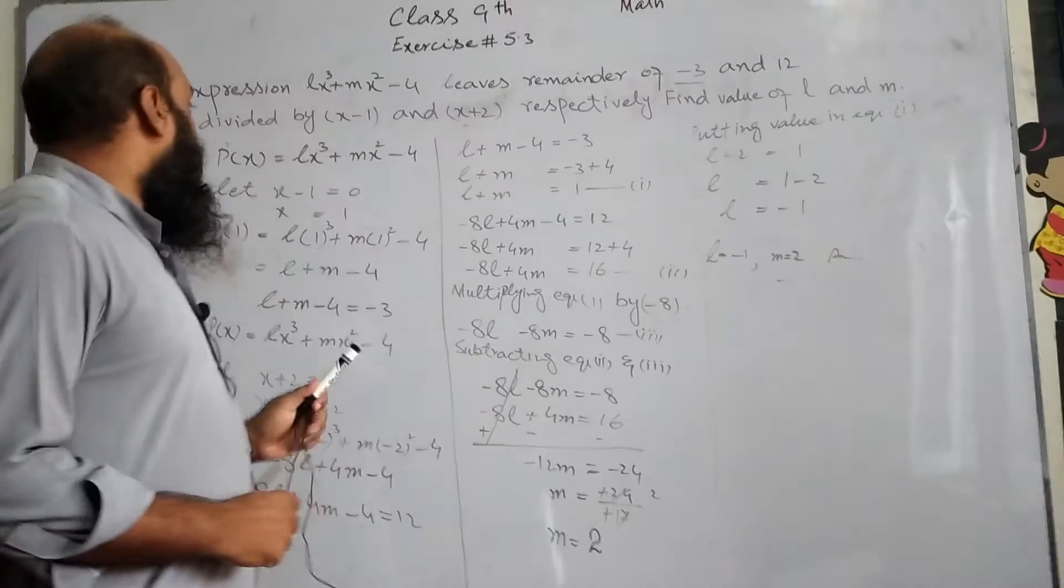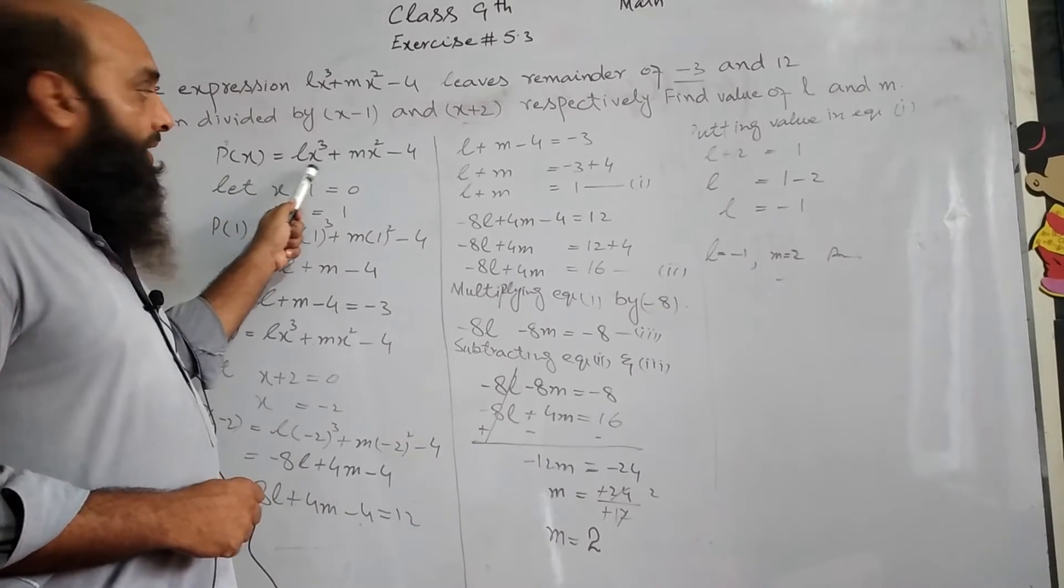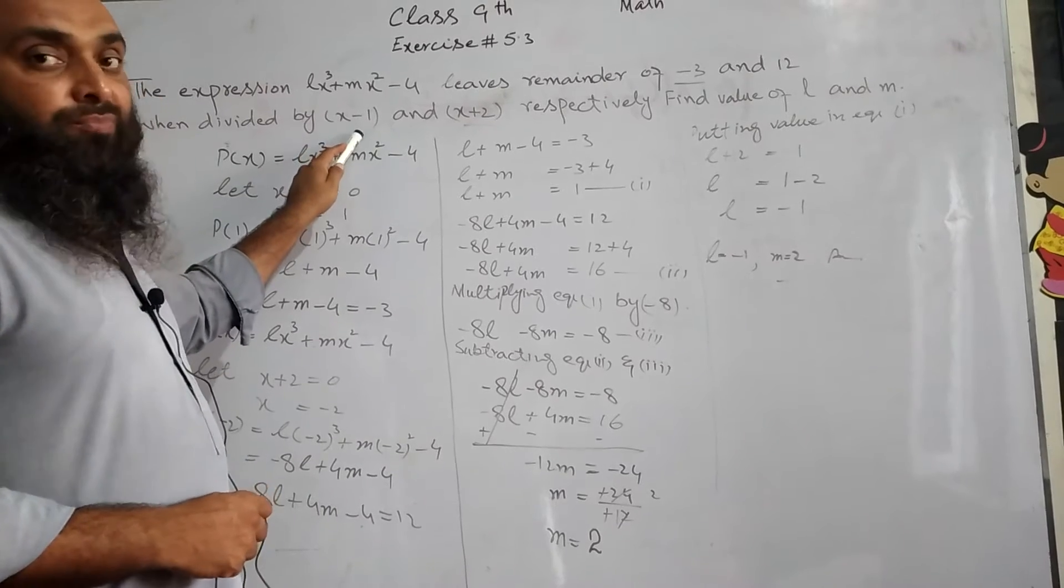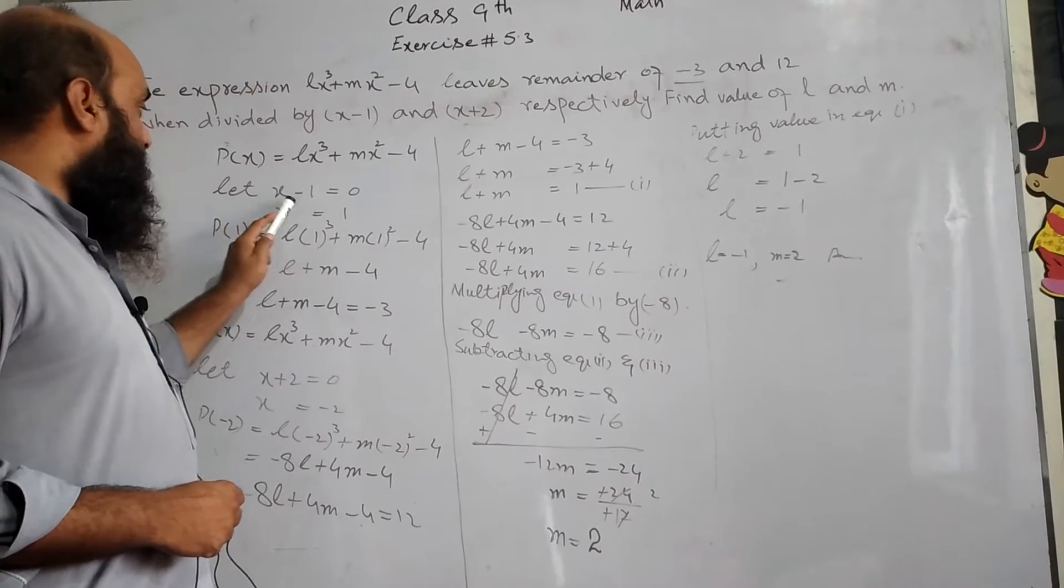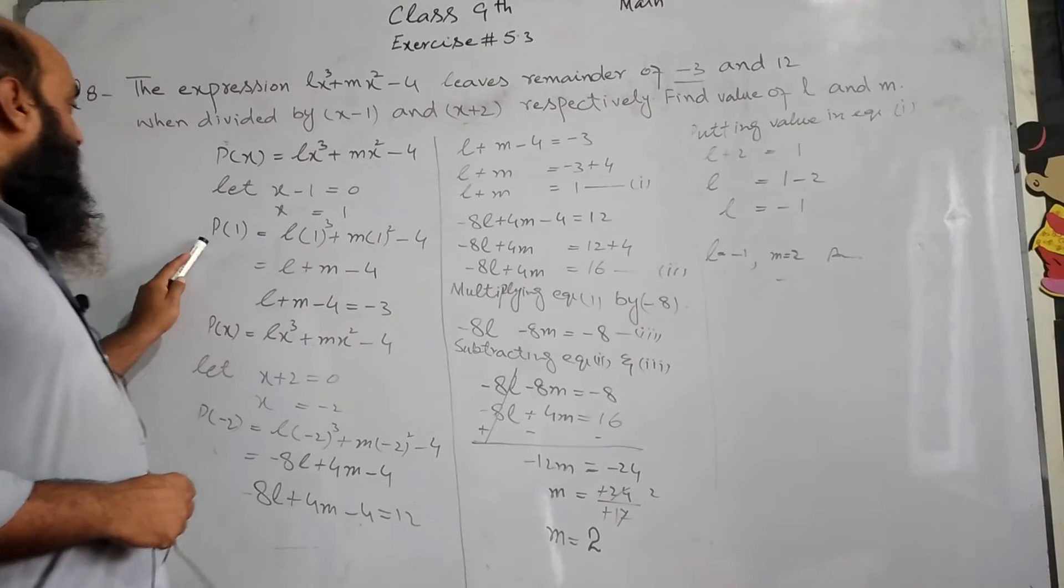First of all, we see that P of x equals to lx² plus mx minus 4. Next we divide it by x-1. When we divide it by x-1, x-1 equals to 0, so x equals to 1. So what do we do? P of 1.